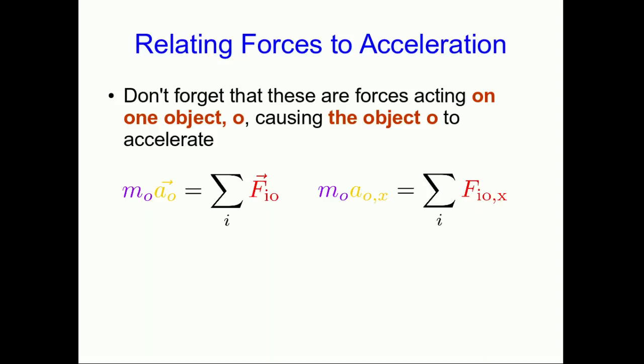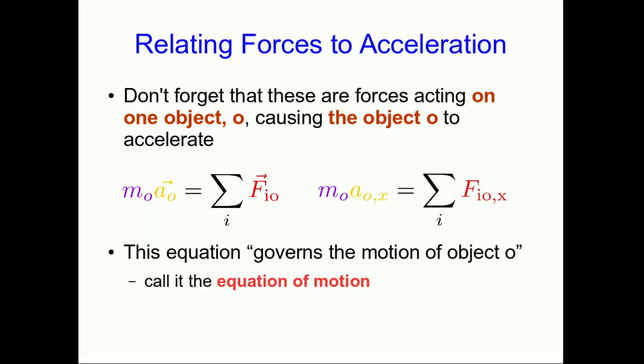And they add up to the inertia of this object O times its acceleration. This equation governs the motion of this object O. As long as we know the acceleration and the initial velocity and position, we can figure out all the motion subsequently. And so we call this the equation of motion. You probably know it as Newton's second law.